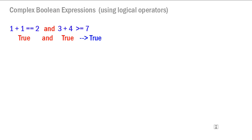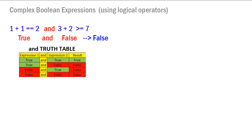A complex boolean expression uses a logical operator. The first one is 'and'. Here we have the expression '1 plus 1 is equal to 2 and 3 plus 4 is greater than or equal to 7'. The left side evaluates to true and the right side also evaluates to true. True and true together gives a true value. But if we change it to '3 plus 2 is greater than or equal to 7', the right side is false. True and false makes the whole expression false.